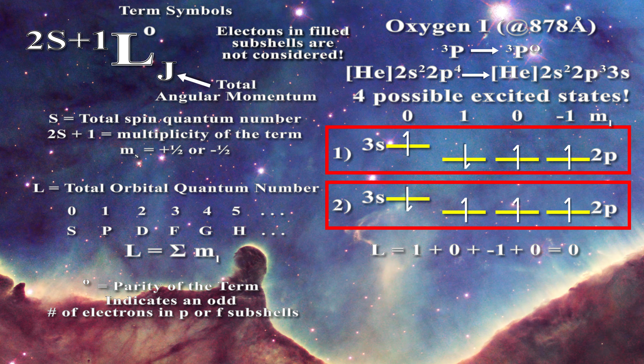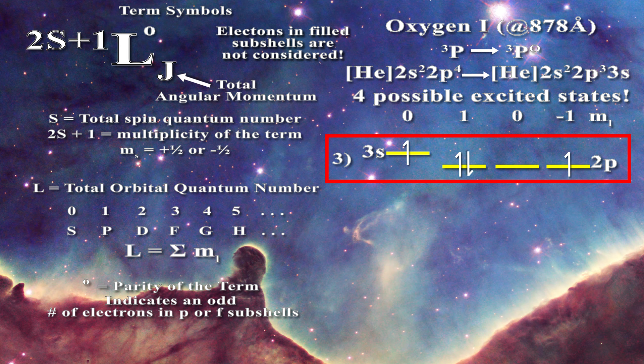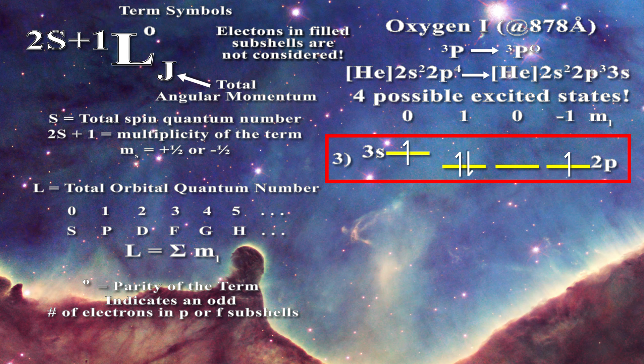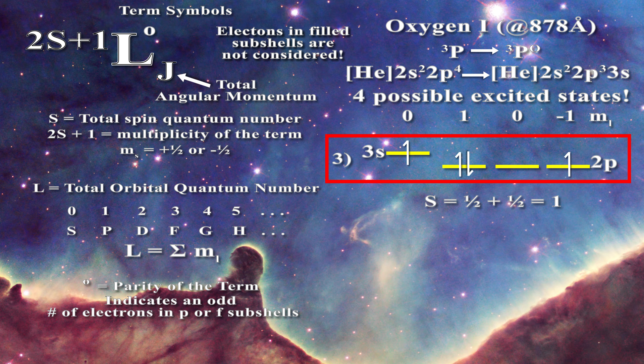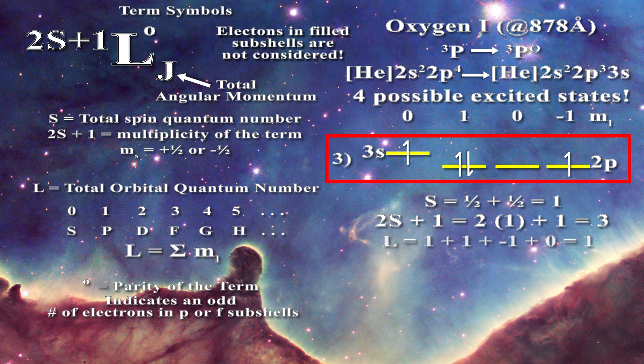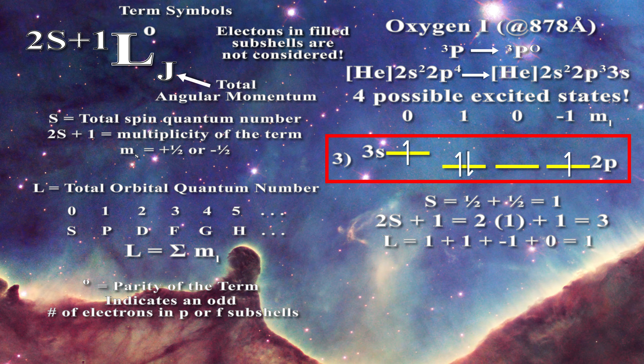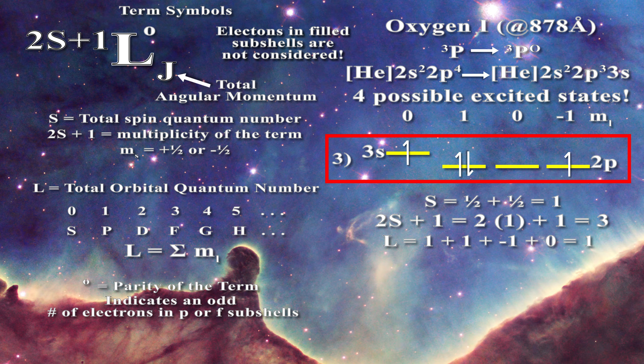There are two possibilities left. In the third case, the electron in the m sub l equals 0 shell makes the transition. The resultant term symbol will be triplet P with parity because S equals one half plus one half, giving a triplet; the orbital quantum number equals one, given by one plus one minus one for the p orbital electrons and zero for the electron in the 3s orbital, with the sum equaling one. So we have a triplet P state with parity — this must be the transition taking place.